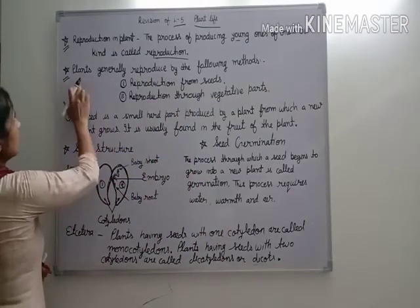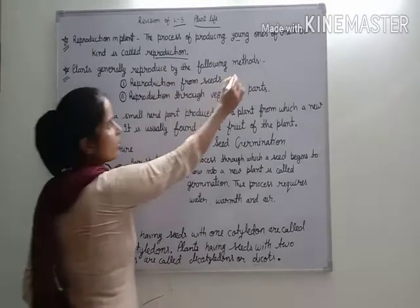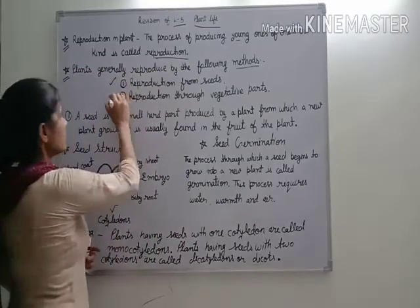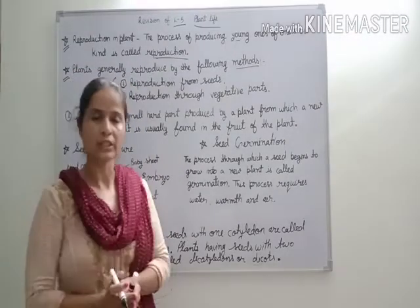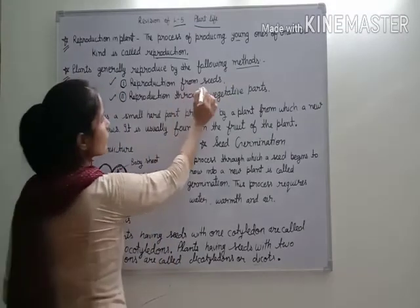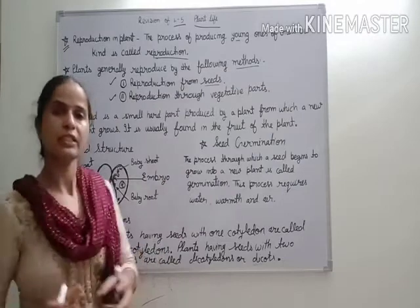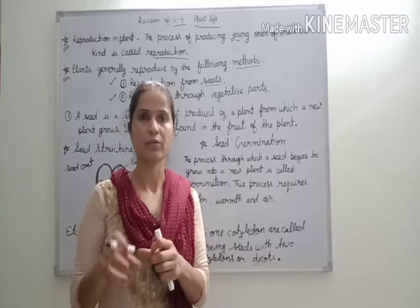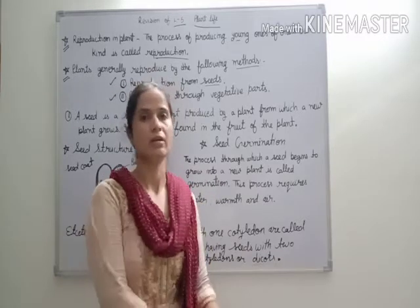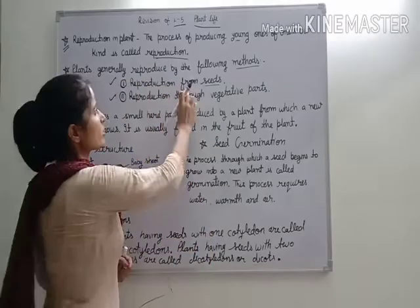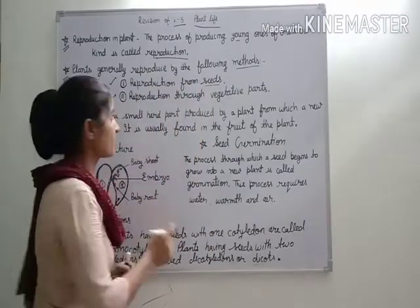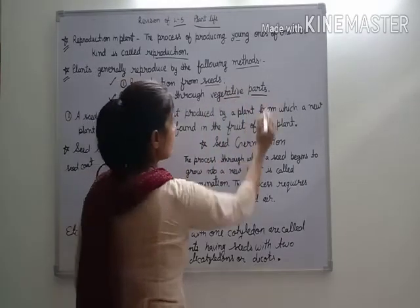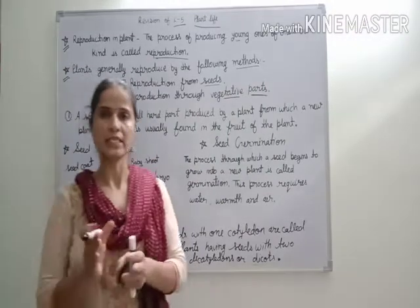Plants generally reproduce by the following methods. Plants generally reproduce by two methods. First is reproduction from seeds — seeds ke through ek naya plant produce karna. Next method is reproduction through vegetative part — vegetative part ke through reproduction.